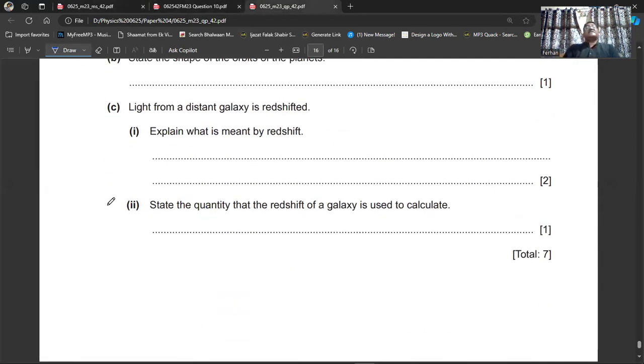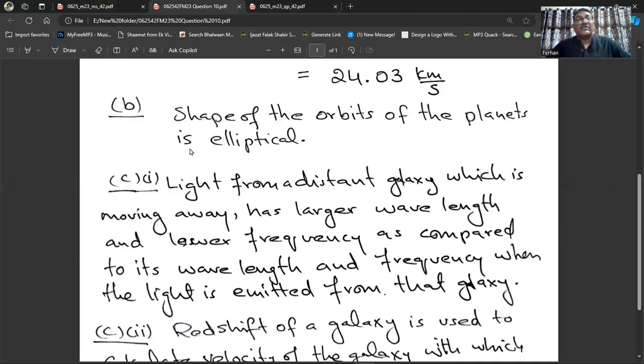Next question is question number 10, part C, first portion. He says light from a distant galaxy is red shifted. Explain what is meant by red shift. The light which is reaching the earth from that distant galaxy which is moving away, when it reaches earth, its wavelength becomes larger and its frequency becomes smaller as compared to the light which was originally emitted from that galaxy. That's why we call this red shift.